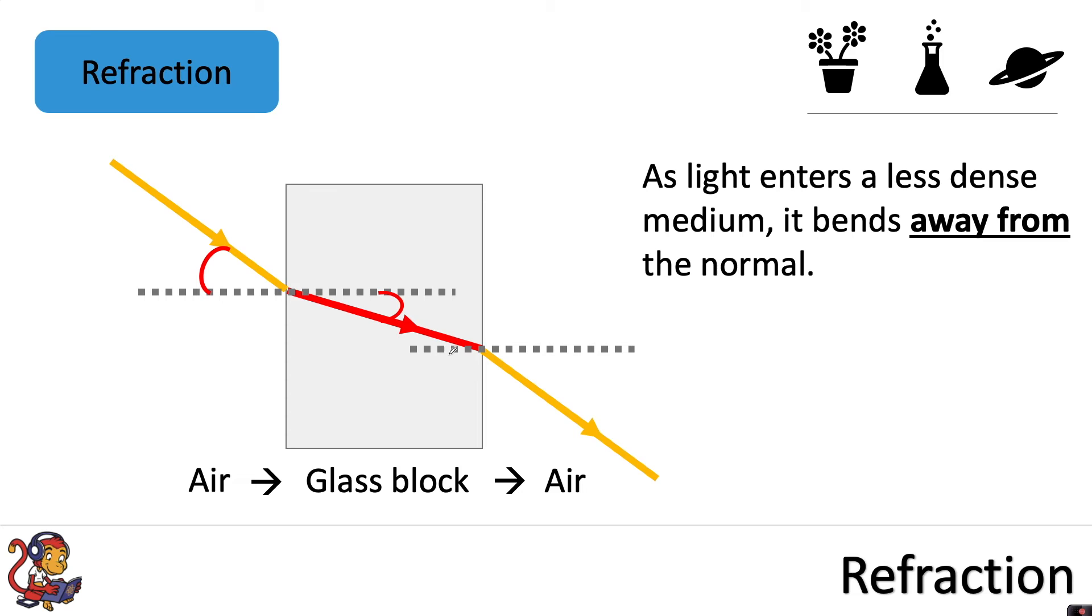As the light enters a less dense medium, it bends away from the normal. So as the light leaves the glass block, it's going from the dense glass block into the less dense air, so it bends away from the normal.